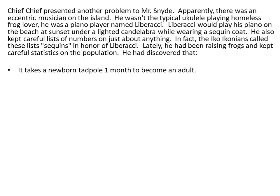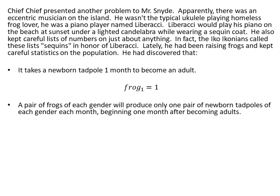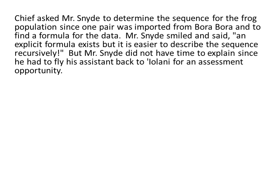He discovered that it takes a newborn tadpole one month to become an adult. So if he started with one pair of frogs, we would say frogs at month one equals one. A pair of frogs of each gender will produce only one pair of newborn tadpoles of each gender each month, beginning one month after becoming adults. So since they had just become adults, they would not be able to reproduce yet — so the number of frogs at month two would still be one. The frogs on Ico Ico do not die. Chief Chief asked Mr. Snide to determine the sequence for the frog population since one pair was imported from Bora Bora and to find a formula for the data.